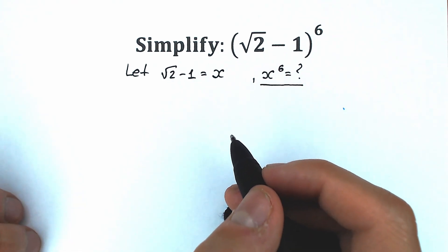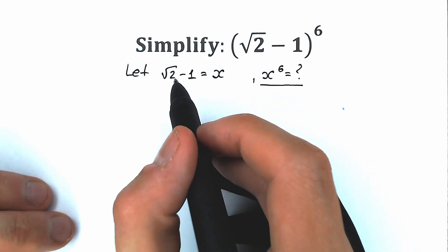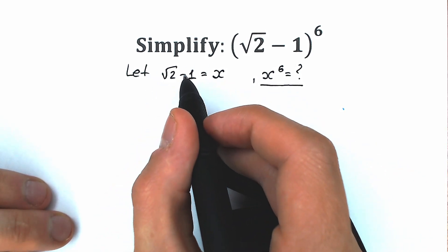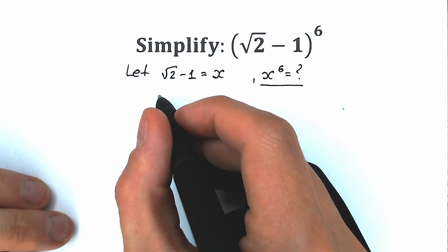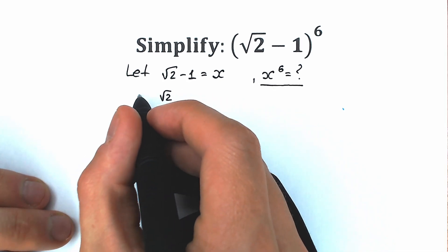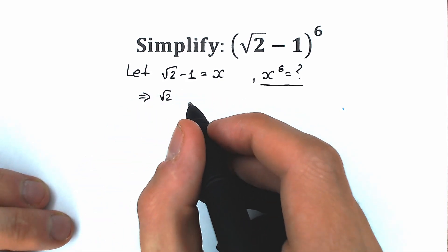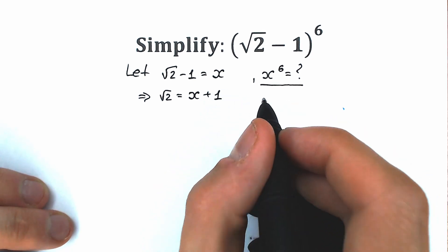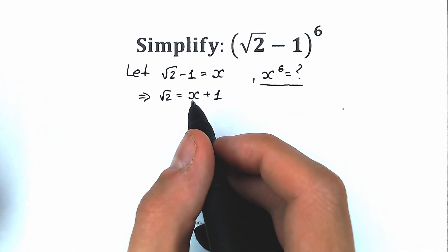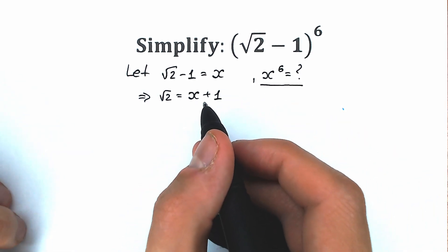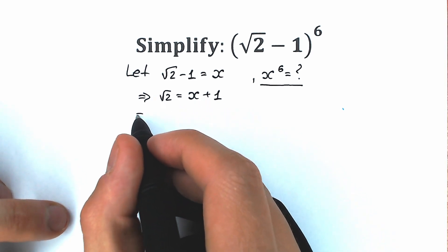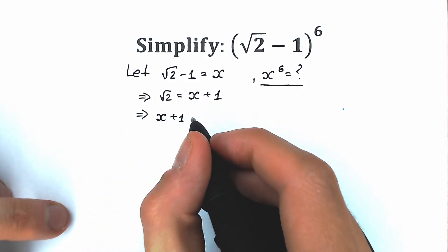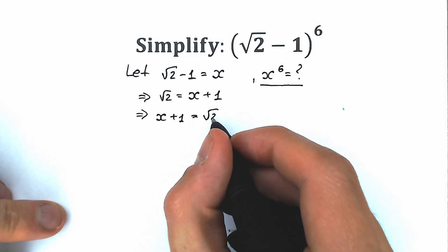Let's simplify this expression a little bit. First of all, let's bring our minus 1 from the left side to the right side. As a result, we have square root of 2. So square root of 2 equals x plus 1. We don't prefer to work with variables on the right side, so let's change places. We can easily do this because we have an equal sign, so we write x plus 1 equal to square root of 2.